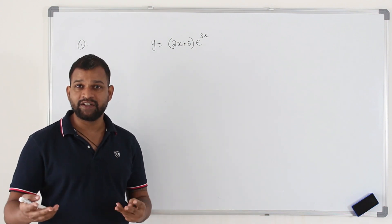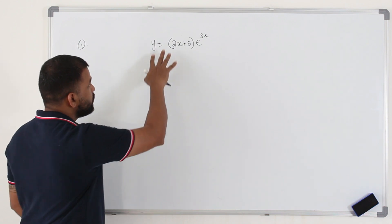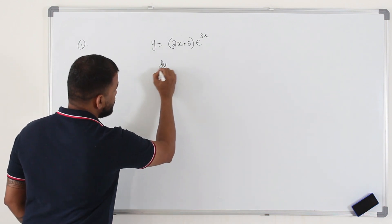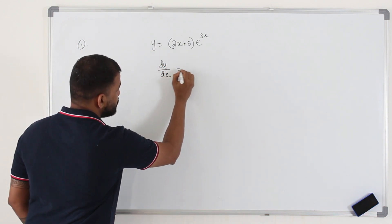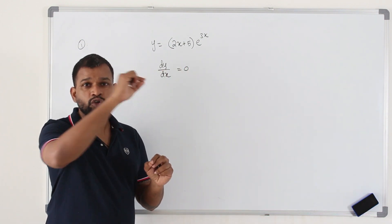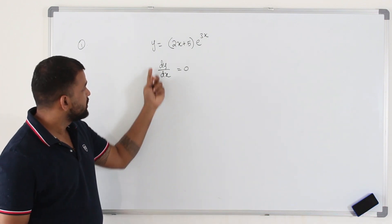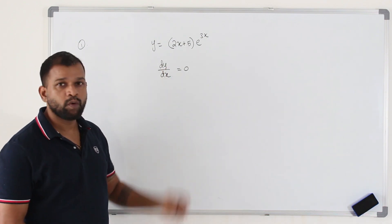So whenever the question talks about stationary point or turning point, a maximum or minimum point, you find the first derivative equated to 0, because at the turning point or the stationary point, if you draw a tangent, the slope of the tangent will be 0. So that's the reason we put the gradient function equal to 0.